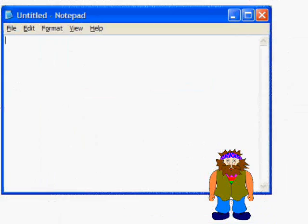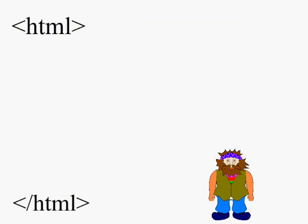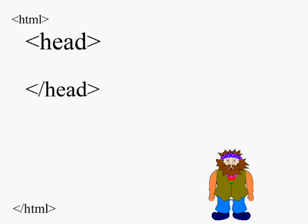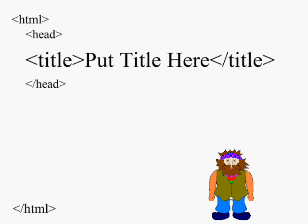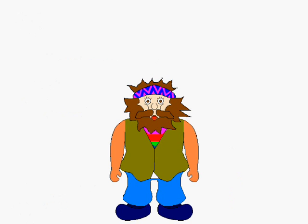So we open up Notepad and we will add in our global structure tags, which are simply the opening and closing HTML tags, the opening and closing head tags. We can also put in our page title, and of course we put in our body tags. These tags provide the necessary outline structure of a web page and will be required in order to demonstrate any other tags I decide to show you.